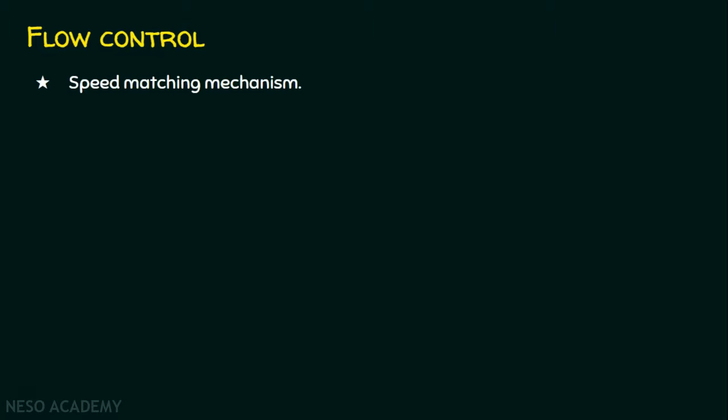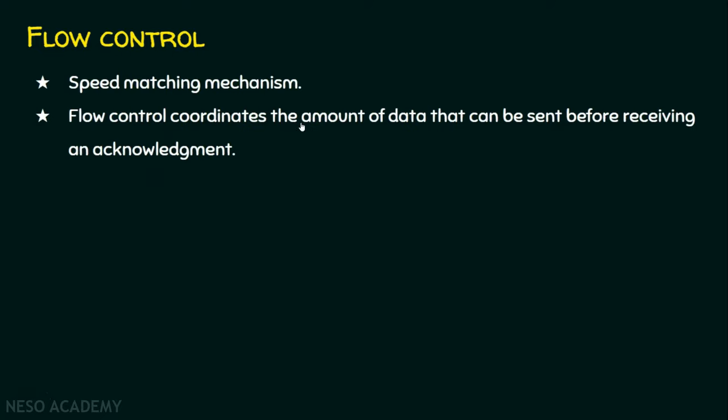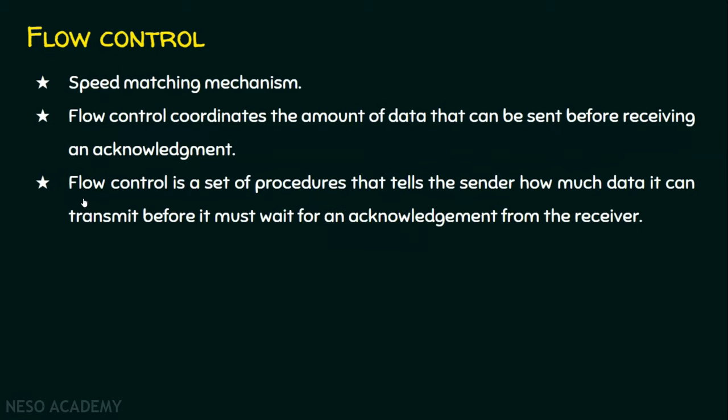Where the receiver should inform the sender at what speed the receiver can handle the data frames. And later, it becomes the responsibility of the sender to send at the speed that they mutually agree upon. So what flow control does? It coordinates the amount of data that can be sent before receiving an acknowledgement. In other words, flow control is a set of procedures that tells the sender how much data it can transmit before it must wait for an acknowledgement from the receiver.